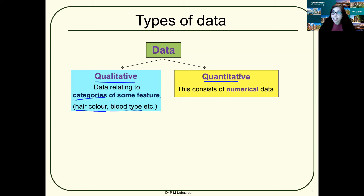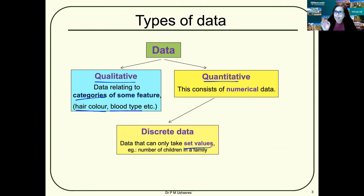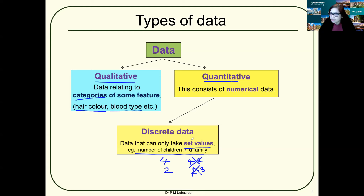Quantitative data can be of two types: discrete data and continuous data. Discrete data can only take set values — that is, finite values. For example, number of children in a family: you can have four children or two children in a family, but you can't have 4.2 children or 2.3 children. Discrete data takes integer values — it's a precise, discrete number.